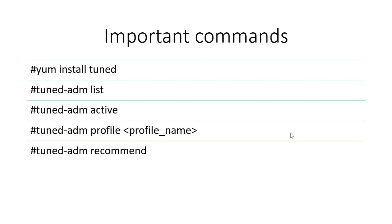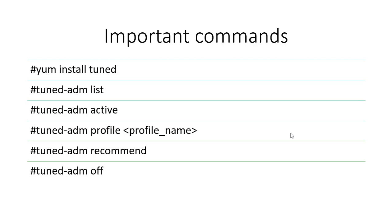If a profile is not given directly, first find out which is the recommended profile and then use the tuned-adm profile command to set that particular profile. tuned-adm off turns this facility off, and tuned-adm active activates it again. Let us see all these things now in practice.